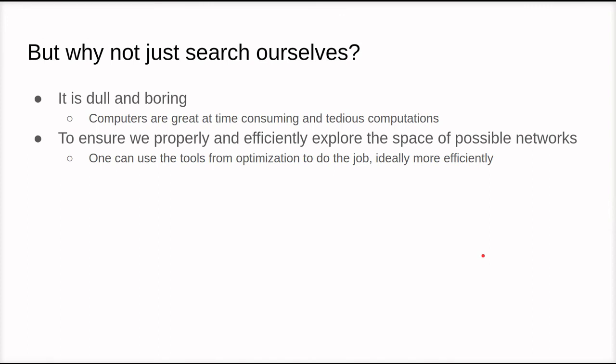But then there's the question of why not just search for the parameters ourselves? This is something we can do manually. We can test a number of hidden layers, test a learning rate, and try these different combinations until we find something that looks good. And that's not necessarily a bad thing, especially if you're using a smaller network or a less complicated network, but it is dull and boring. And computers are great at doing tedious computations. In fact, that is exactly what they are invented for. So we might as well use them for that.